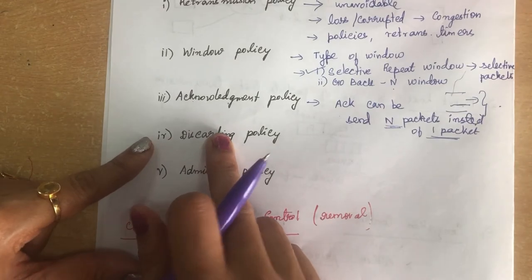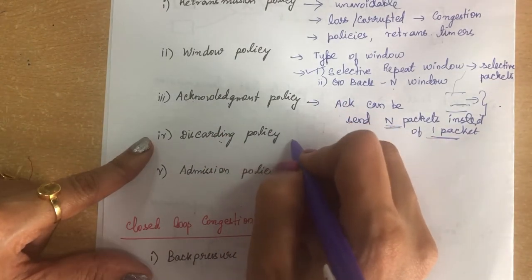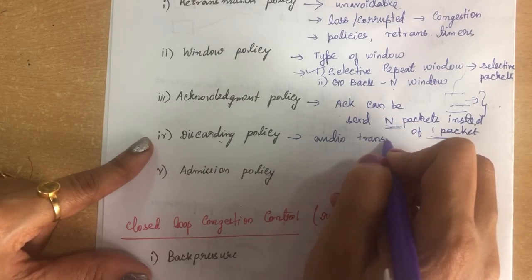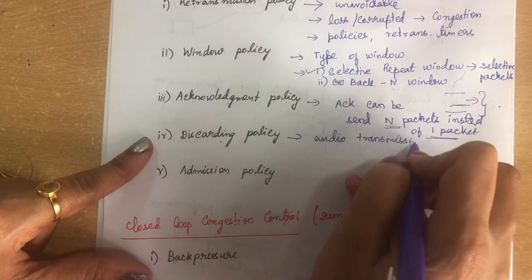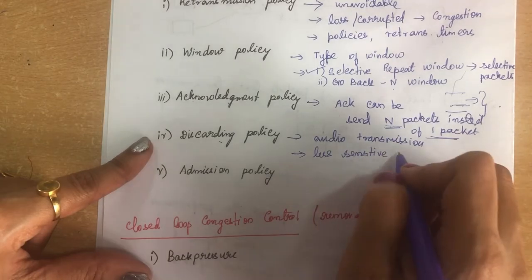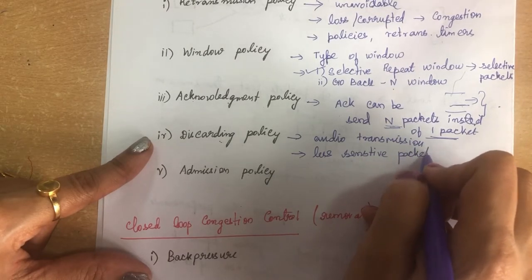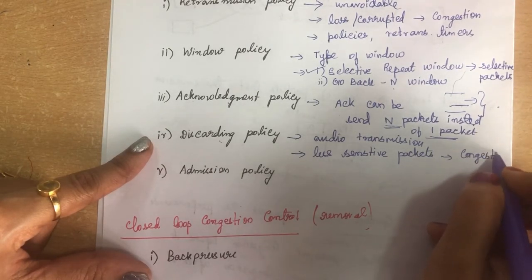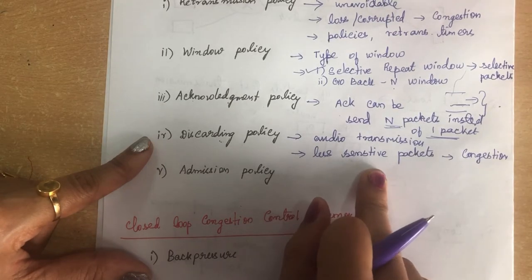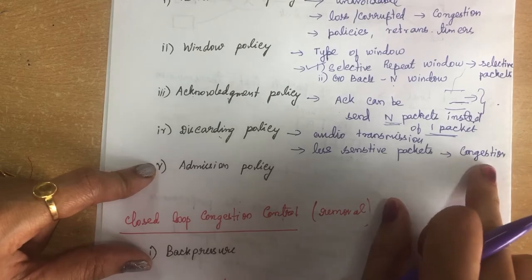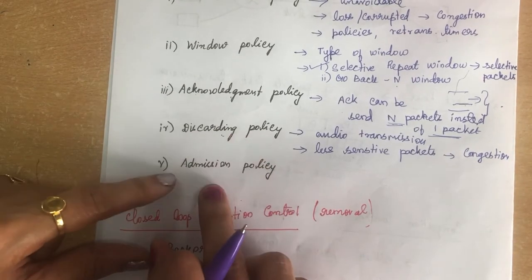Discarding policy is used in audio transmission. While transmitting an audio file, we discard all less sensitive packets. Because of discarding these less sensitive packets, congestion is reduced. Even without the less sensitive packets, the quality of the sound is still preserved, so this prevents congestion.